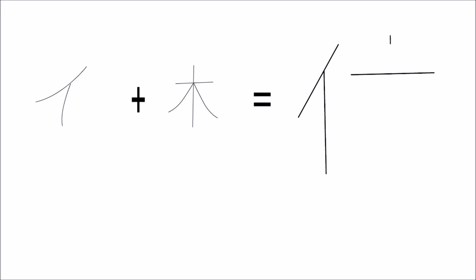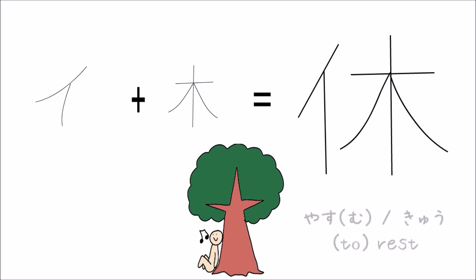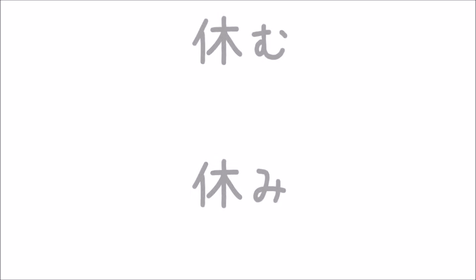If we combine the kanji for person and tree, we get the kanji for to rest. Just imagine a person resting against the tree. The kunyomi is yasu. With the okurigana mu, it is a verb to rest — yasumu. The onyomi is kyuu, used in the compound word. And depending on what okurigana you put, the meaning can change a little.